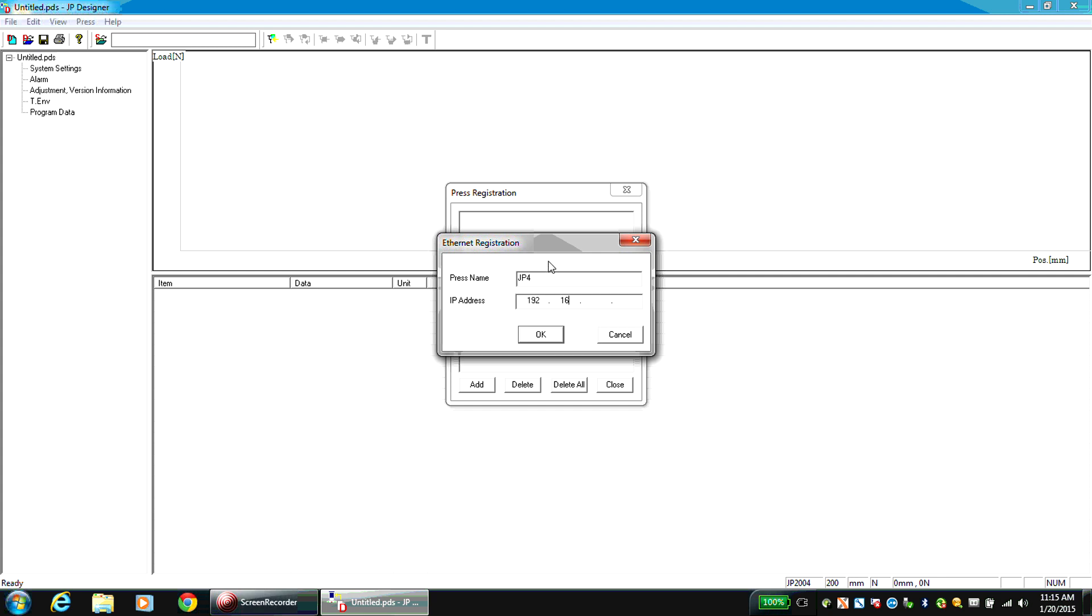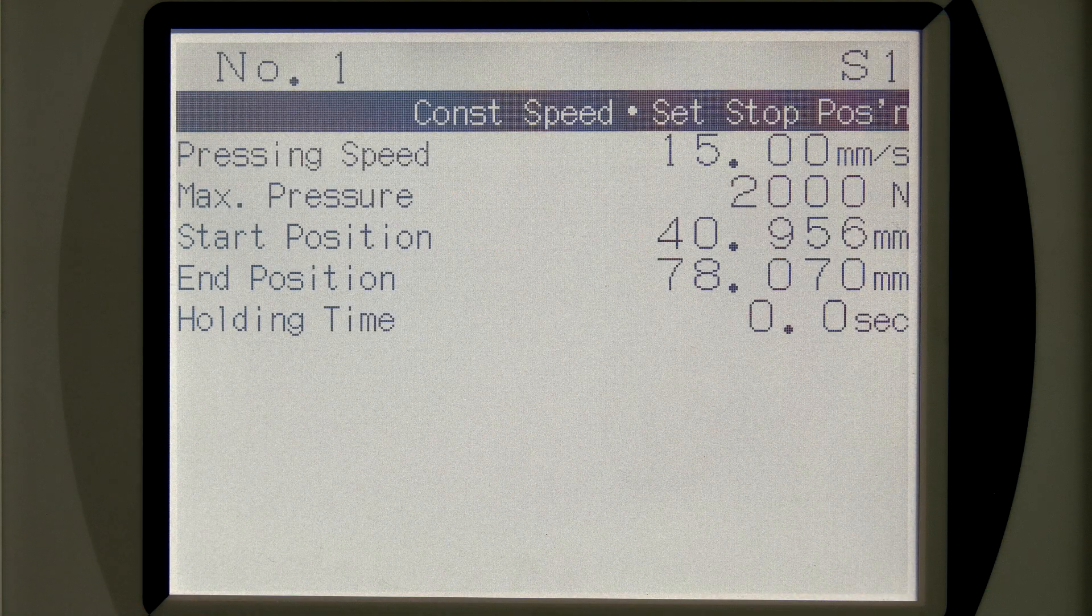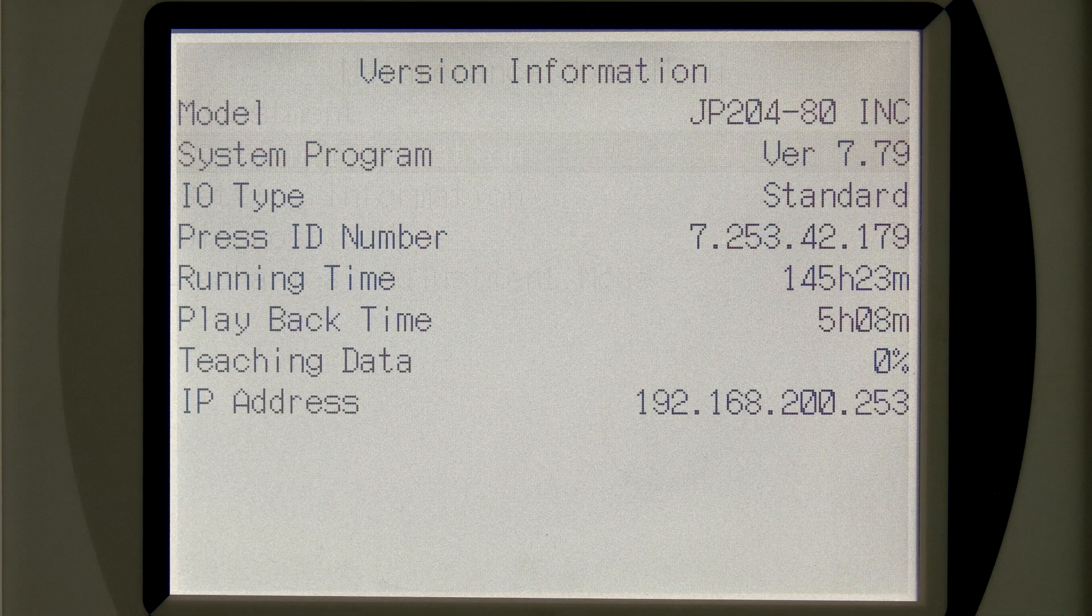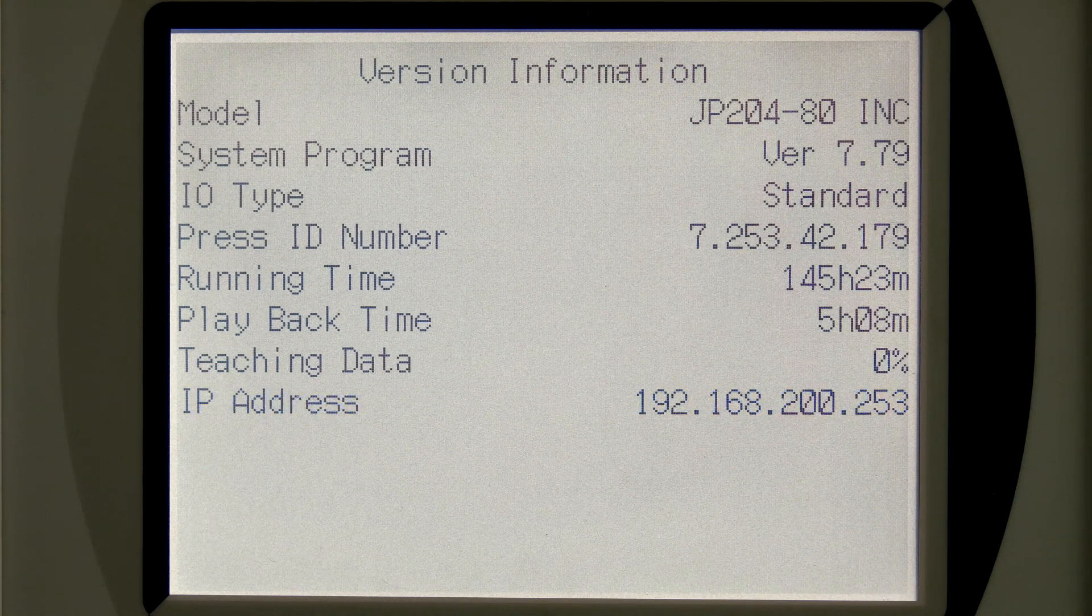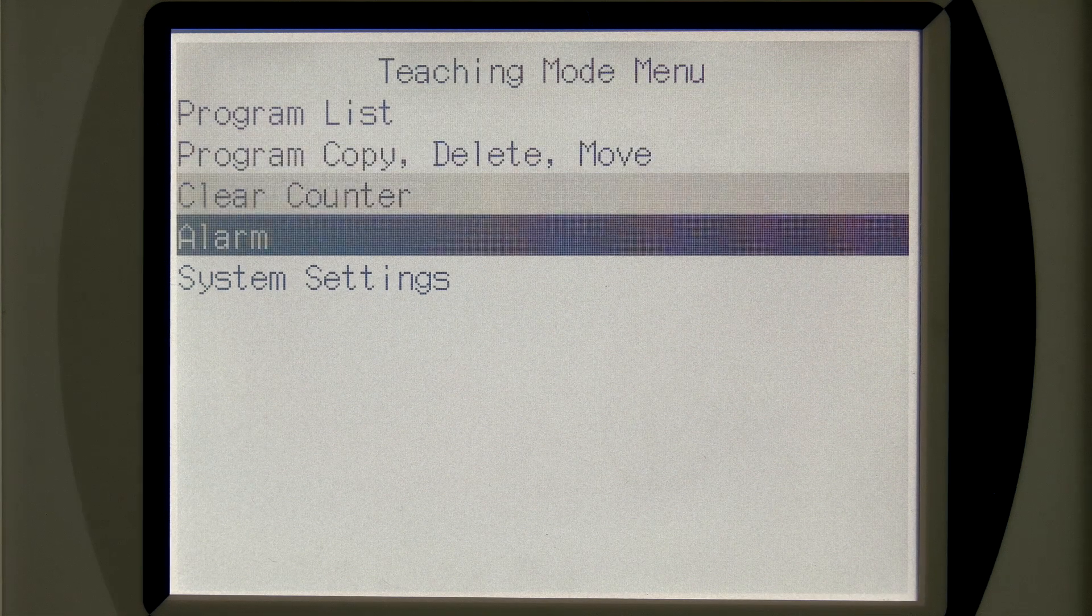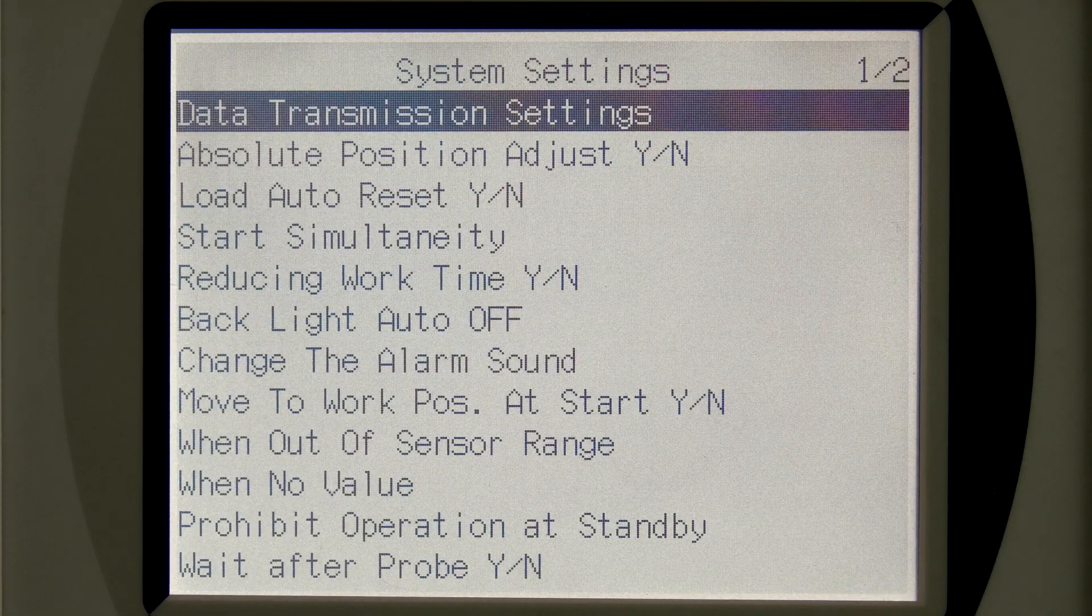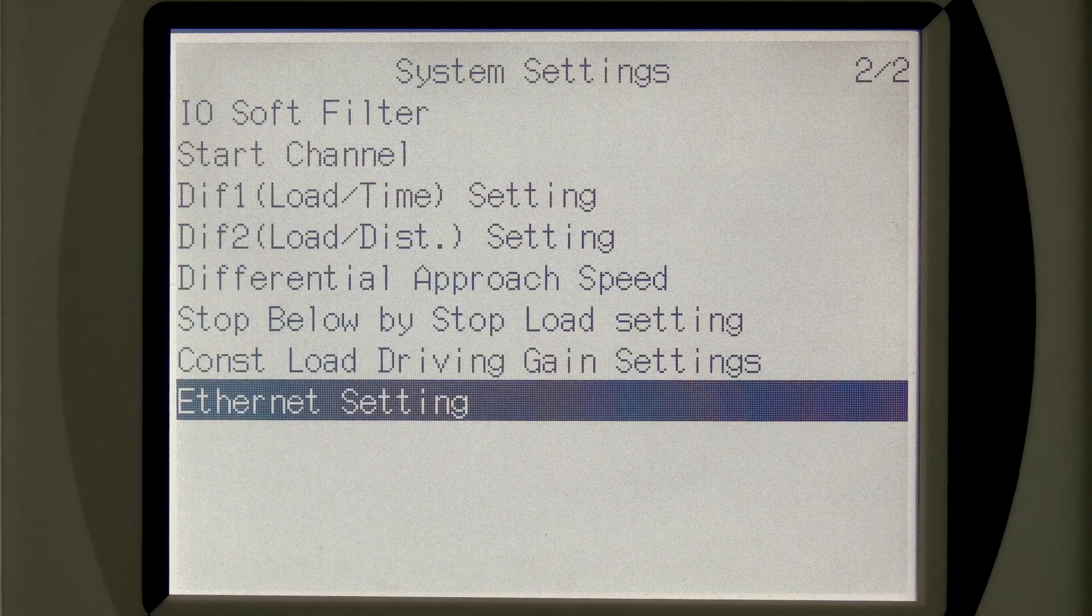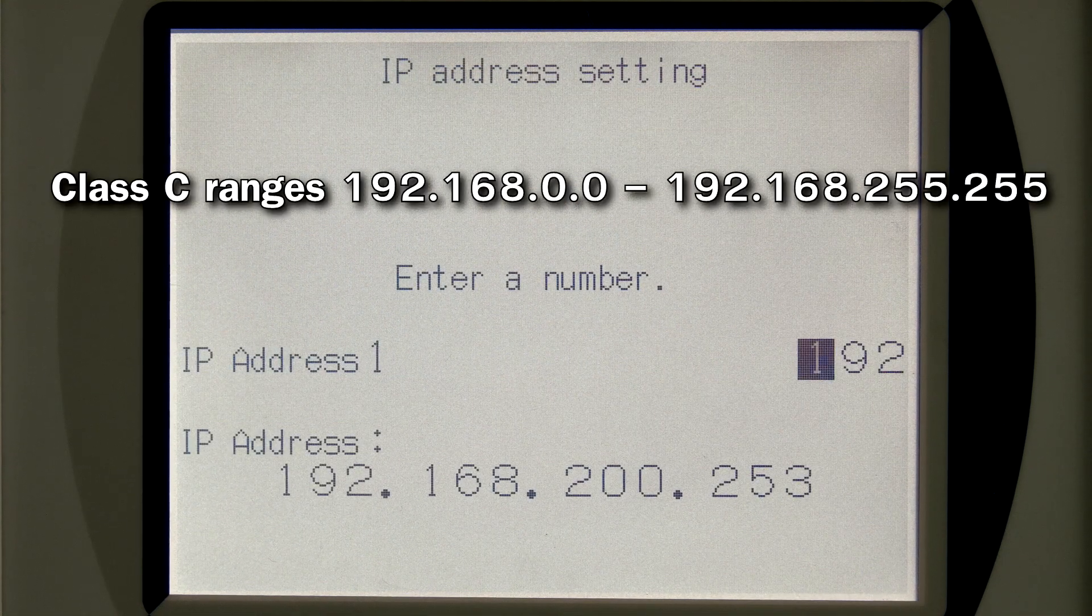To find out the ElectroPress IP address, make sure the press is in Teaching Mode and press the Mode key. Select Version Information and the IP address is located at the bottom of the screen. To change the IP address, return to the main screen and press the Menu key. Select System Settings and hold Shift down to enter the second screen of menu items. Select Ethernet setting and IP address setting. Here the values can be modified.